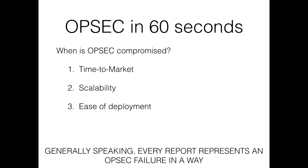This is a generalization — the entire talk is a generalization, so yes there are always contradicting examples. We have a storyline we're trying to follow, so if you want to tell us there is a contradicting example, you're probably right — come tell us later. Most APT reports represent some sort of an OPSEC failure: someone got caught and someone managed to discover what happened to a certain degree.